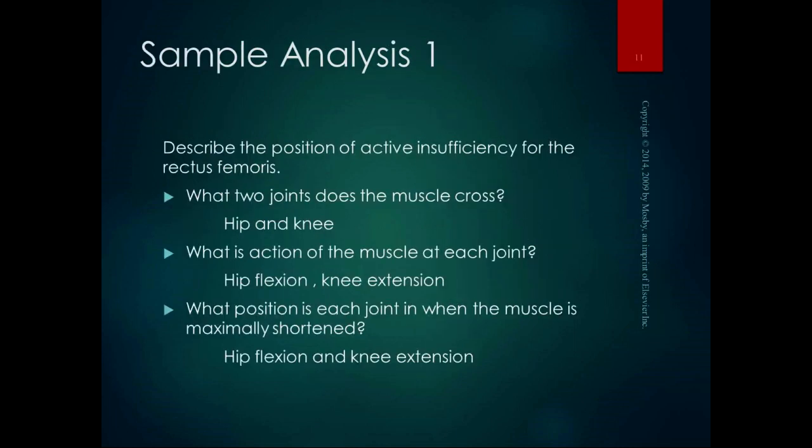Here's a sample analysis. The question says: describe the position of active insufficiency for the rectus femoris. What two joints does the rectus femoris cross? It crosses the hip and the knee. What is the action of the muscle at each joint? The rectus femoris does hip flexion and knee extension. So when the muscle is maximally shortened, you are in hip flexion and knee extension. If you were to stand up and take your leg out to as close to 90 degrees as you could get, eventually your rectus femoris is going to run out of space and you won't be able to bring it any higher.